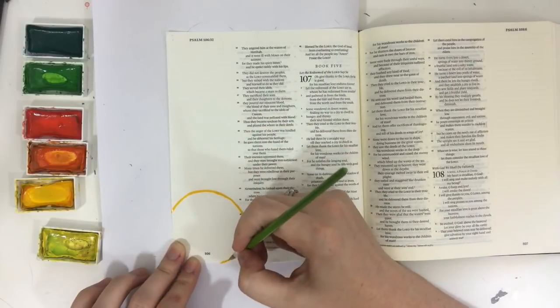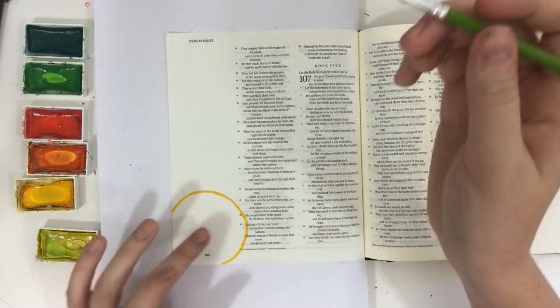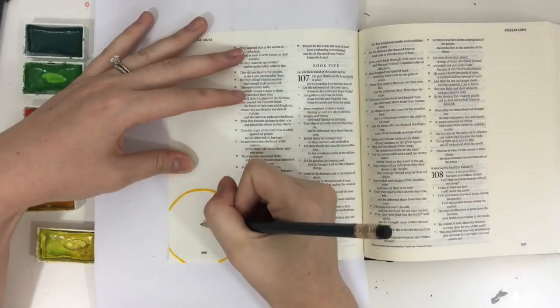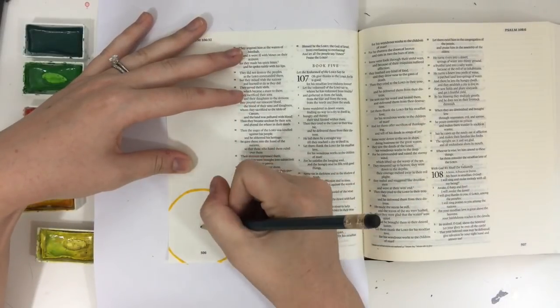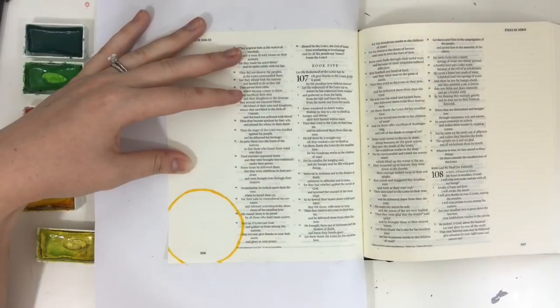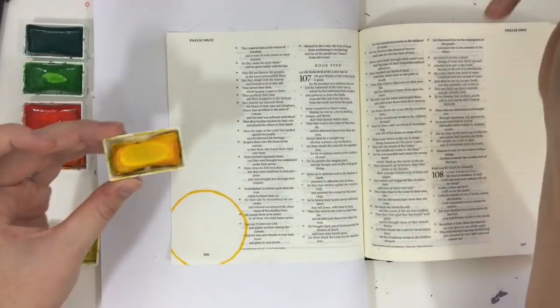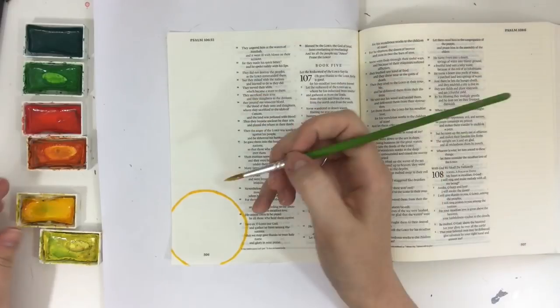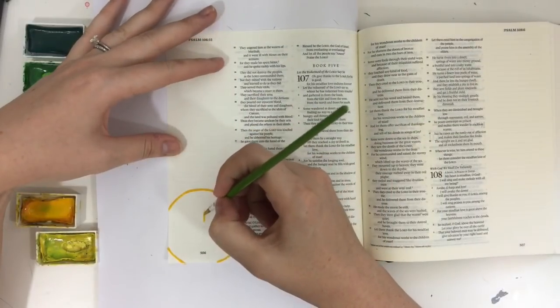So I'm using a size 8 round brush, just a cheap one from the craft store that comes in packs. I'm using my Kuretake Gansai Tambi watercolors. It's a great set that comes with a bunch of different shades of colors and so I just picked out six colors.